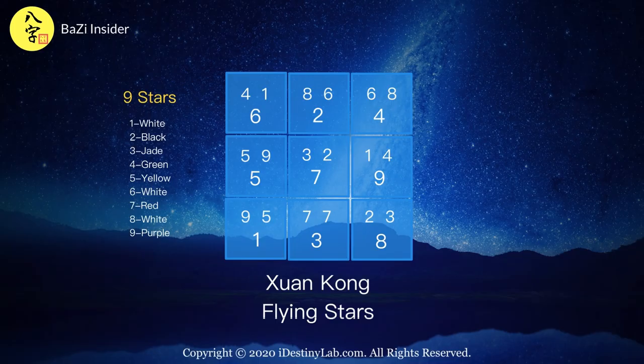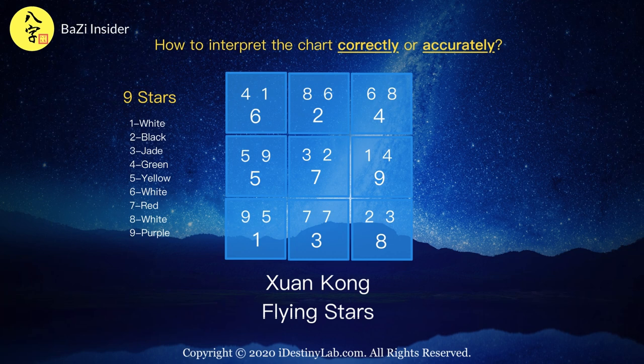For those who practice shuen kong flying star fengshui, this type of chart is not a stranger to you. But the main concern is how to interpret the chart correctly and accurately. There are many ways of interpretation and there are actually no right or wrong methods, just whether the interpretation shows prominent results or indications that suit your unit or not. In this video, I will go through a slightly comprehensive type of interpretation method for the shuen kong flying star charting.